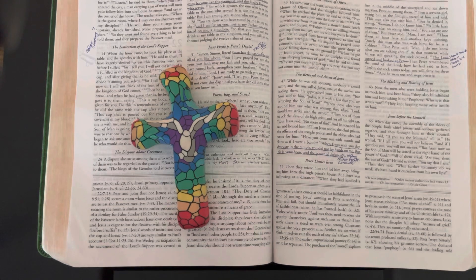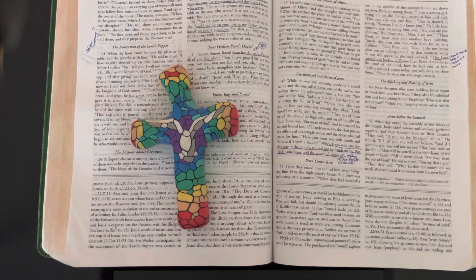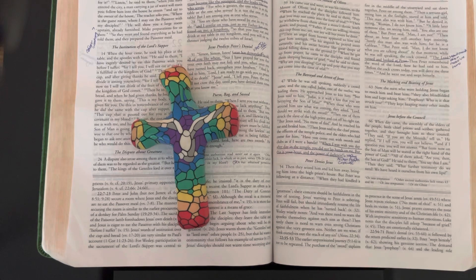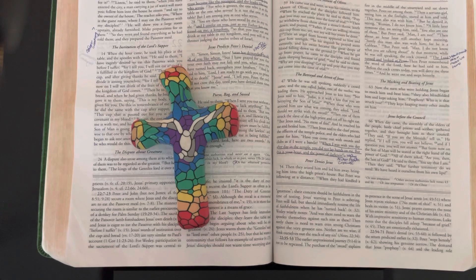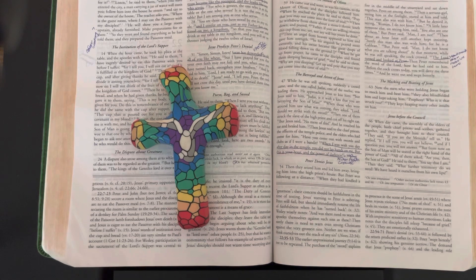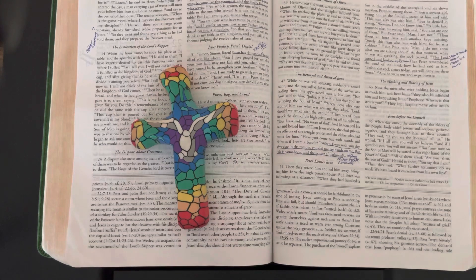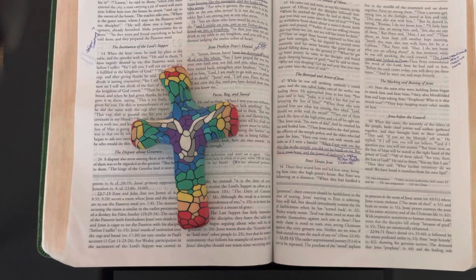When they had kindled a fire in the middle of the courtyard and sat down together, Peter sat among them. Then a servant girl, seeing him in the firelight, stared at him and said, "This man also was with him." But he denied it saying, "Woman, I do not know him."